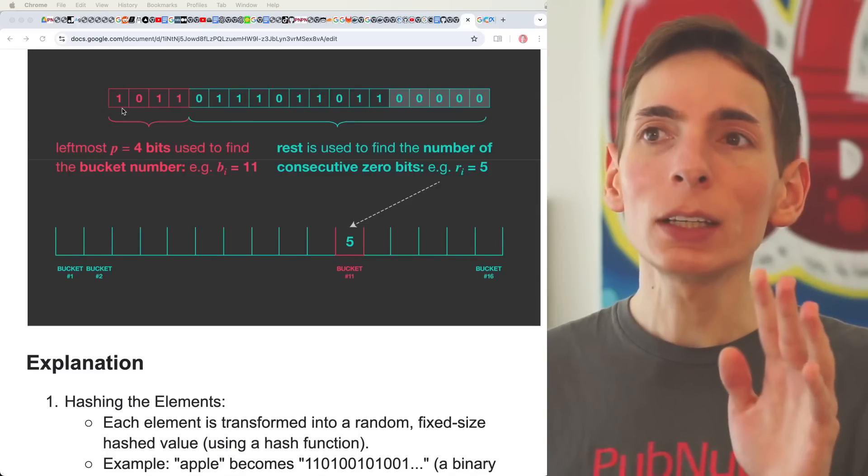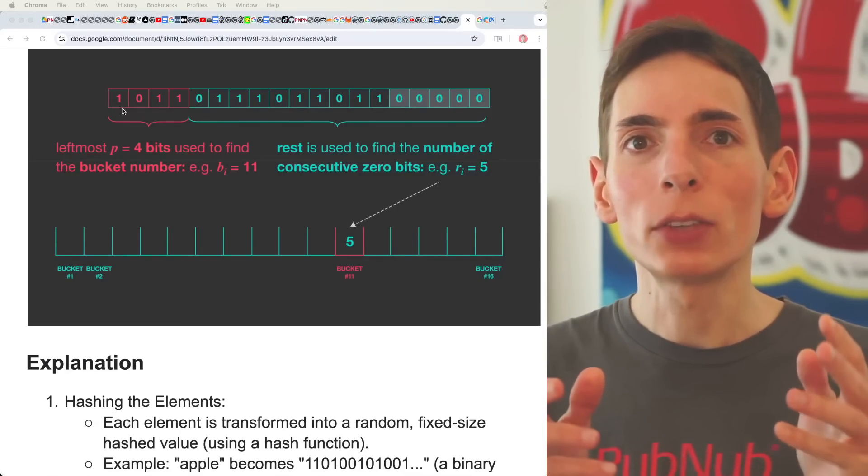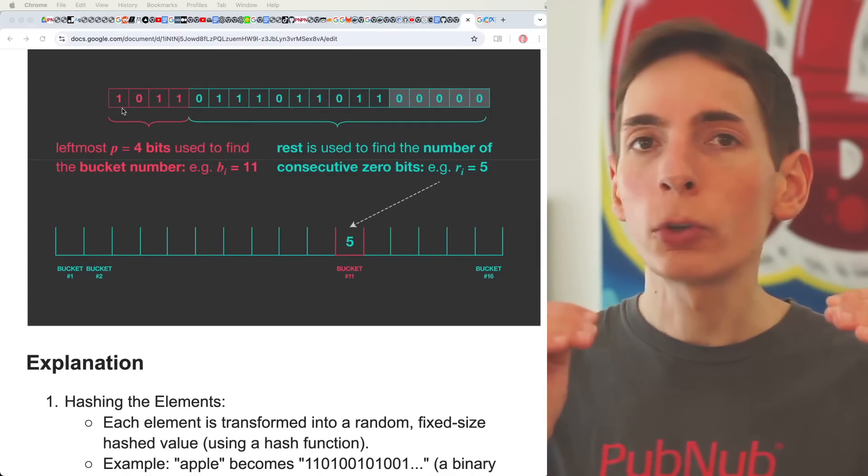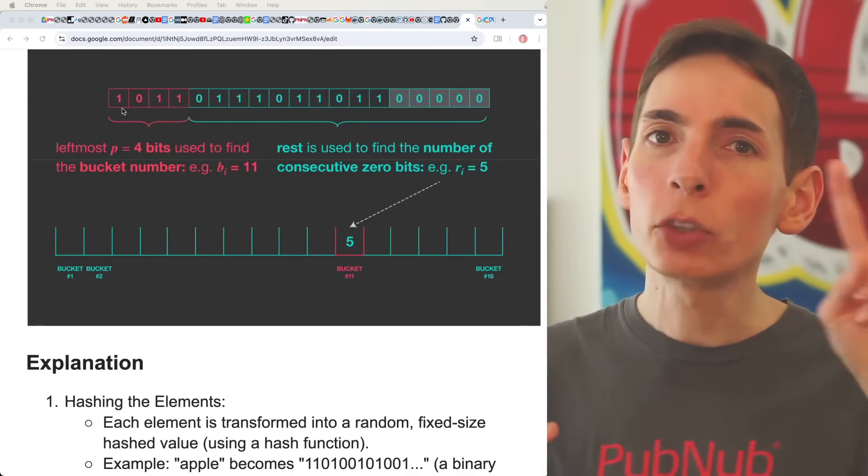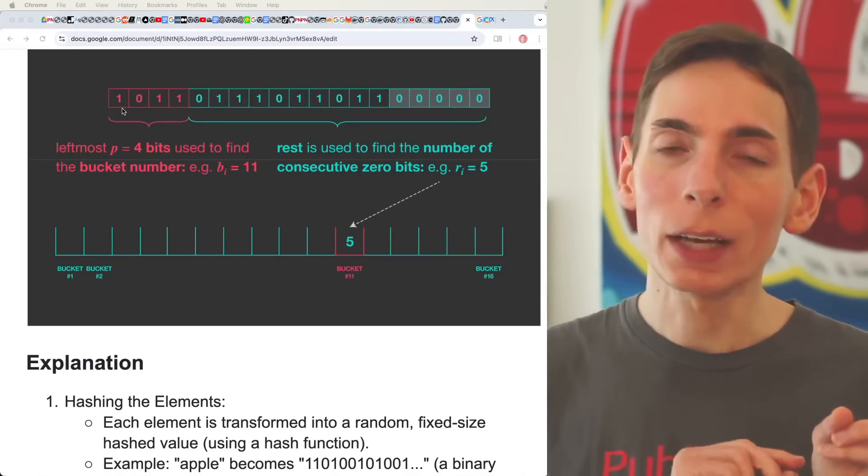We are counting... HyperLogLog is meant to count unique elements. So say if you have the word apple and the word orange, but the word orange appears 50 times, the word apple appears once, you only have two unique elements there - apple and orange. That's what HyperLogLog is going to count for us.